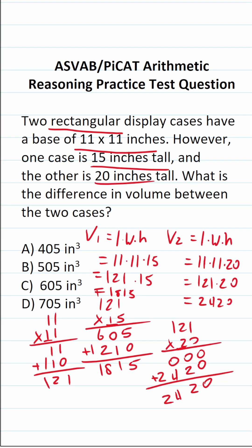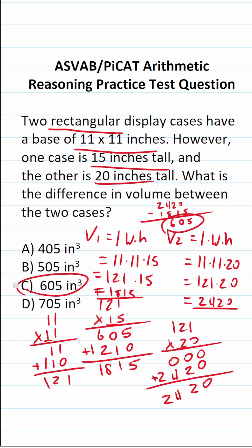So what is the difference in volume between the two cases? We're going to do 2420 minus 1815. 20 minus 15 is 5. 24 minus 18: counting up from 18 — 19, 20, 21, 22, 23, 24 — that's 6. So the difference between them is answer C, 605 cubic inches.